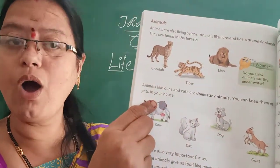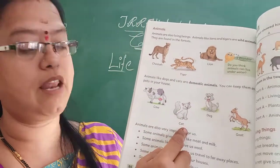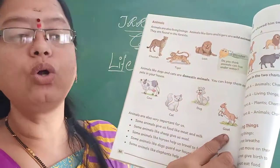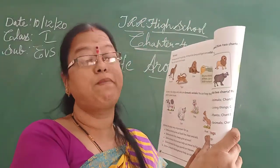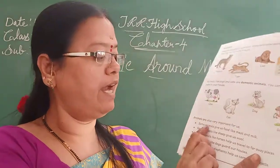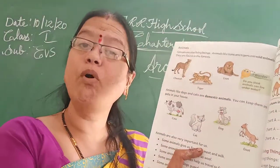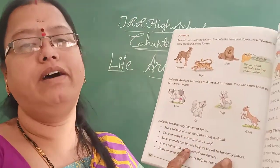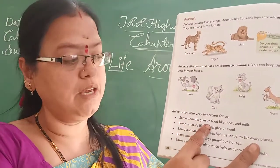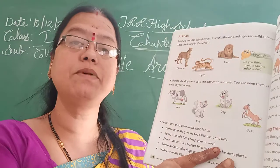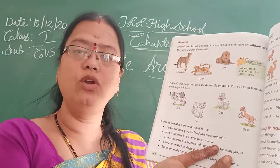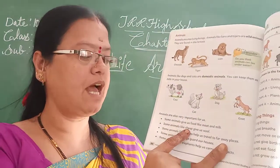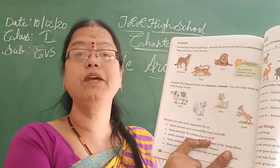What is this? Cow. These are pet animals — dogs, cats, cows, goats. Parrots are also pet birds. Animals are very important for us. Some animals give us food like meat and milk — cow and buffalo give us milk, and sheep and goat give us meat. Some animals like sheep also give us wool.